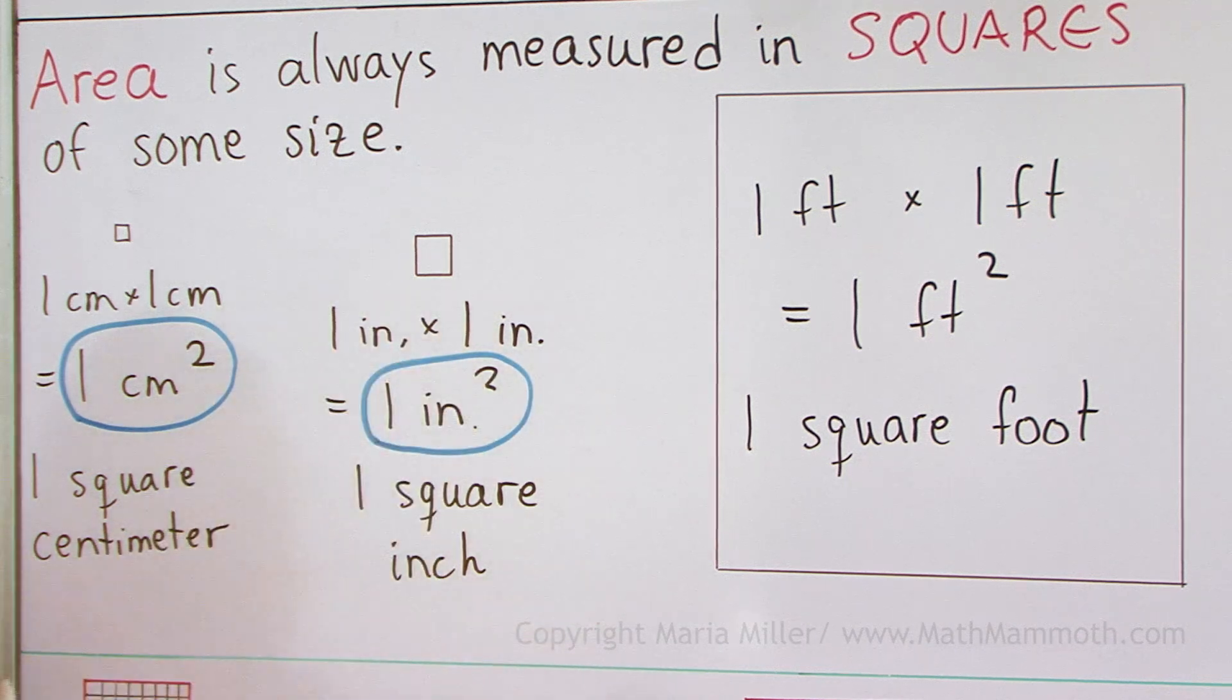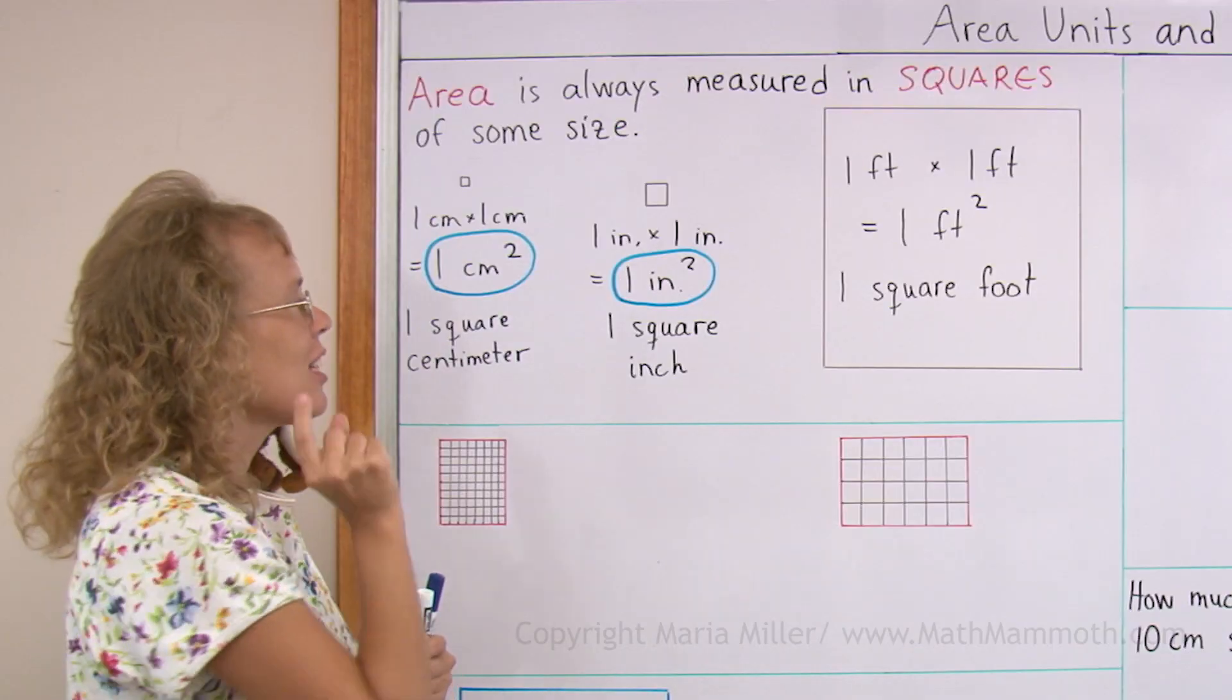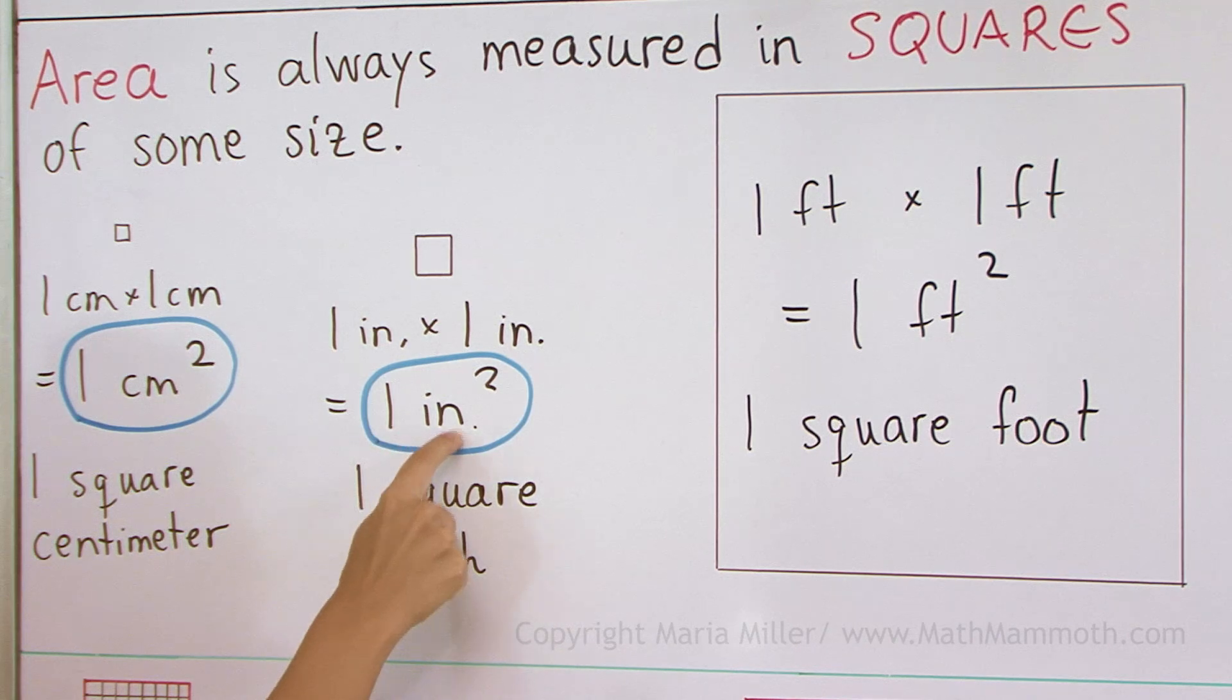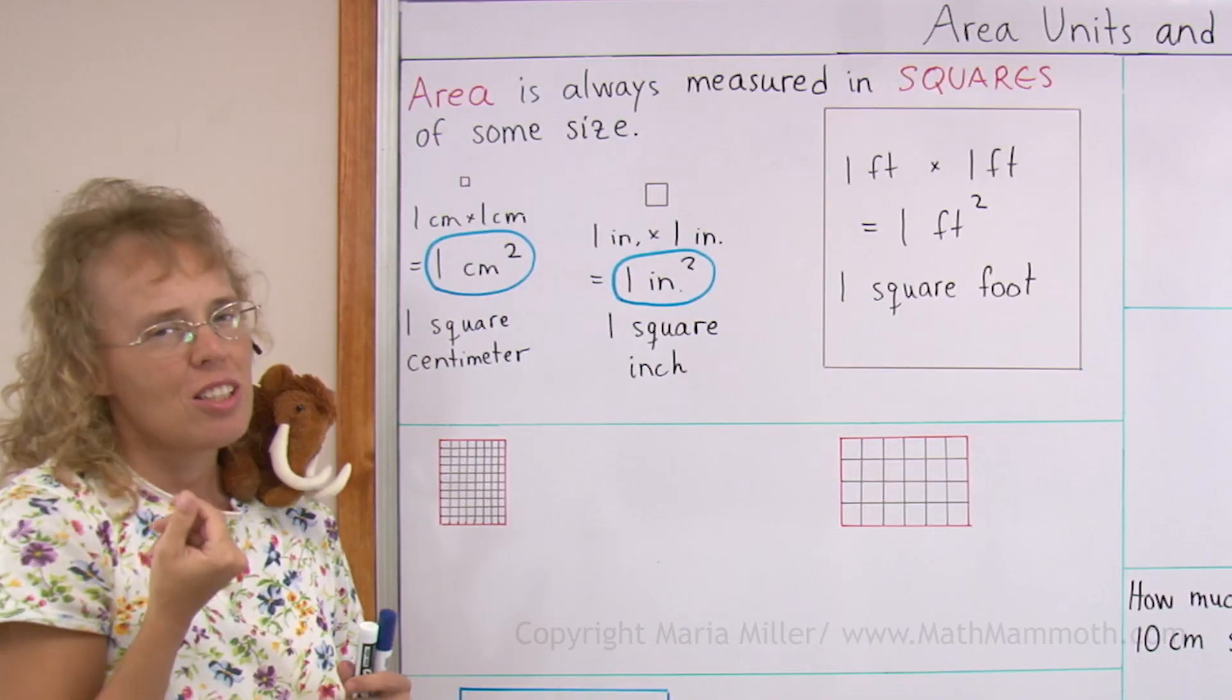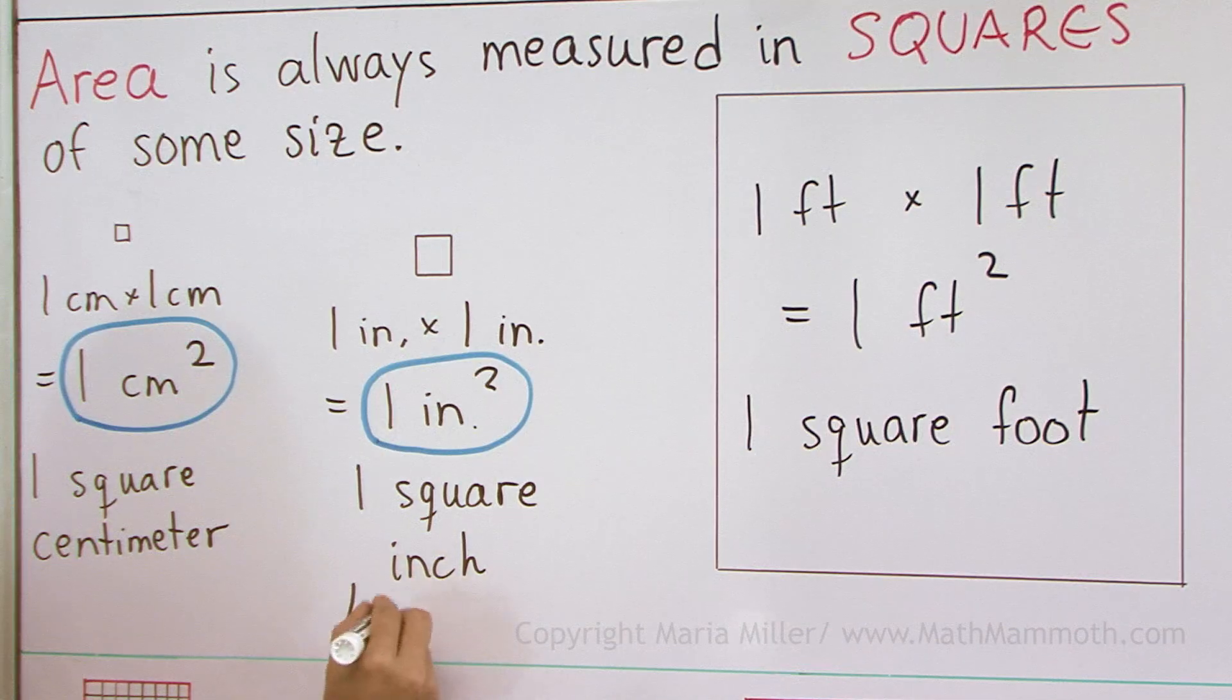This one is a one square inch. Each side of this square measures one inch, so that is a one square inch. We can write it that way: 1 and then in and then the elevated 2. There's another way to write it too, which is like this: 1 sq in.